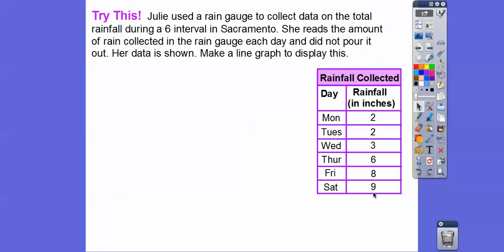So she didn't pour it out. It just kept filling up and filling up. So we're going to make a line graph. Now remember, the first column is our X's. So that's going to be the bottom row down here. So we're going to put the days down here. And then the rainfall is our second column. It's going to be going up. So rainfall is going to be going up right here.